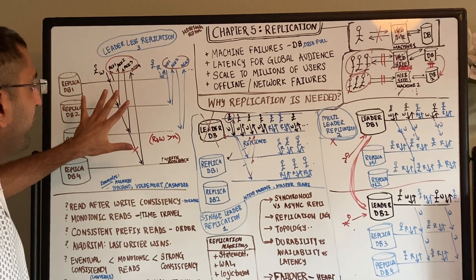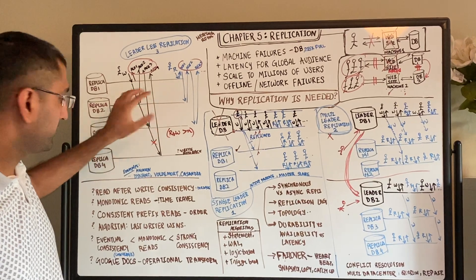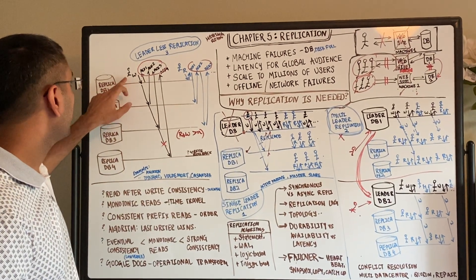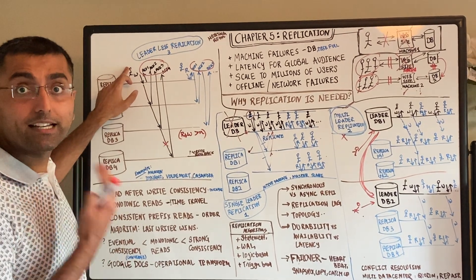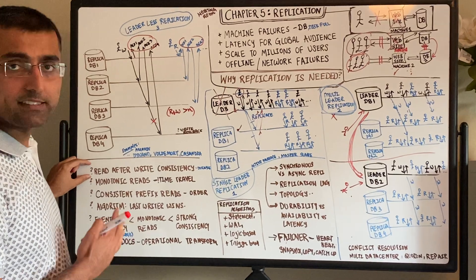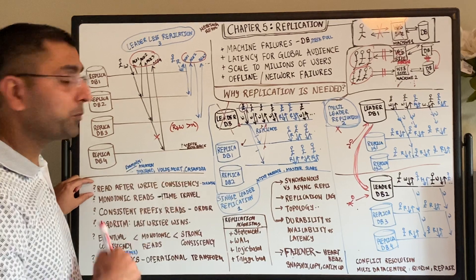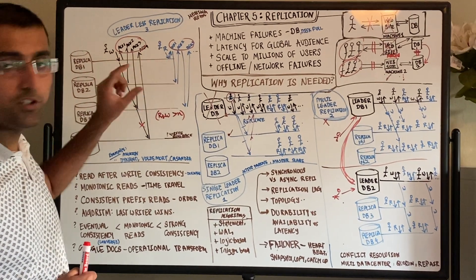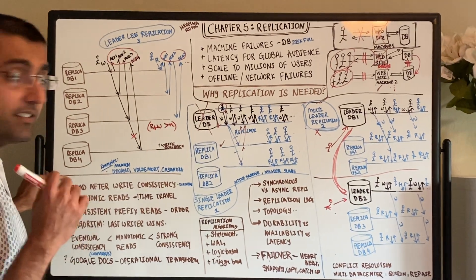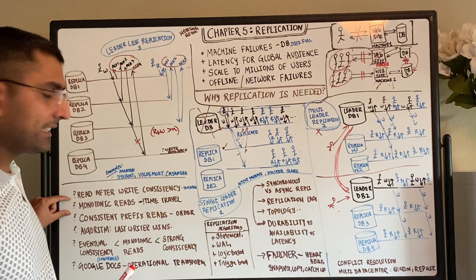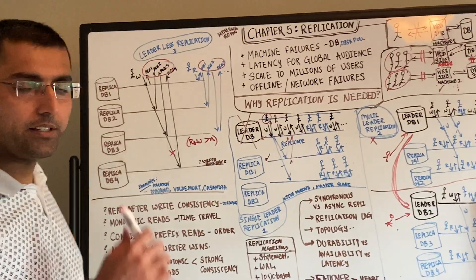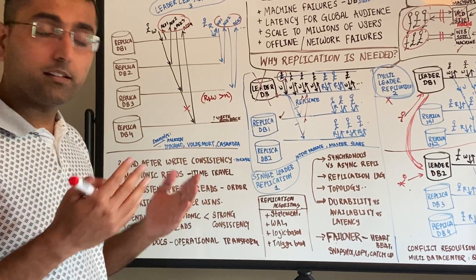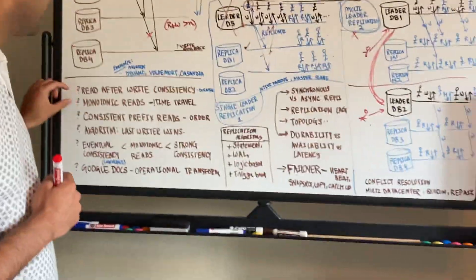Leaderless replication provides high resilience for reads and writes, but conflict resolution becomes even harder. Read-after-write consistency is the property that what you read after you have written is the same thing you wrote — if you write to a replica and then read from multiple replicas and get something different, you need an algorithm to return the correct data. Monotonic reads is also important: if you write things in order A, B, and C, when you read them you should also read them in order A, B, and C, so reads are never seen out of sequence.